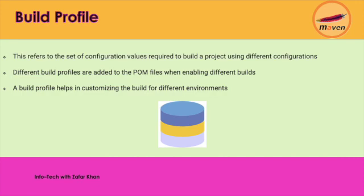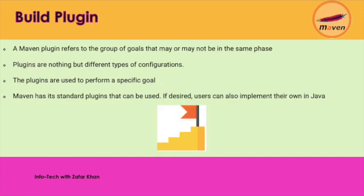The build profile refers to the set of configuration values required to build a project using different configurations. Different build profiles are added to POM files when enabling different builds. Build profiles help in customizing the build for different environments. A Maven plugin refers to a group of goals that may or may not be in the same phase. Plugins are used to perform a specific goal — a plugin is nothing but a set of different types of configuration available.